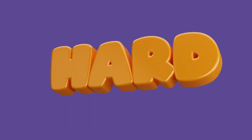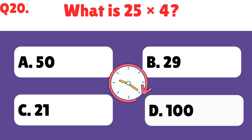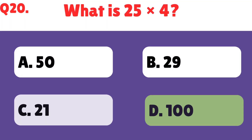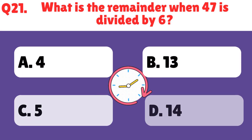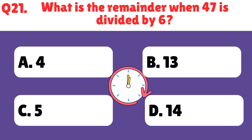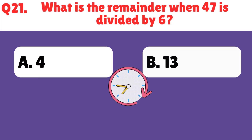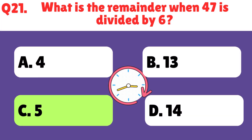Let's move to the hard level now. What is 25 times 4? 25 times 4 is 100. What is the remainder when 47 is divided by 6? The right answer will be 5.